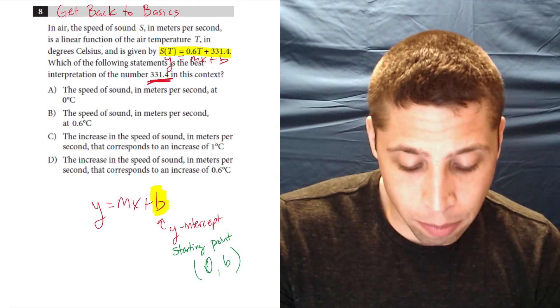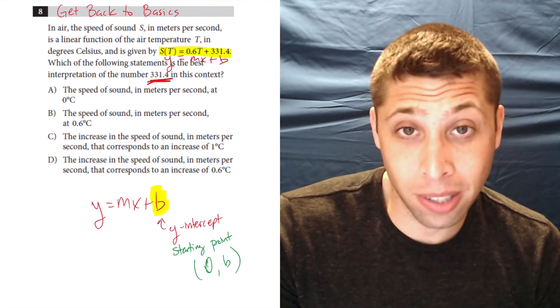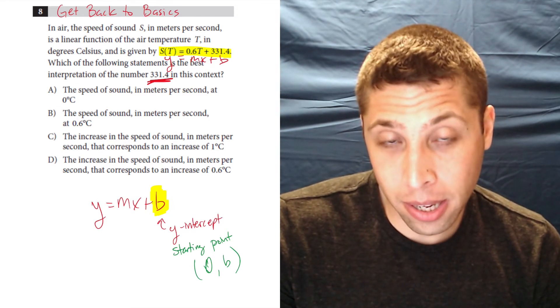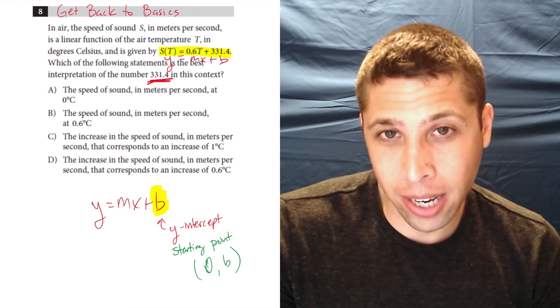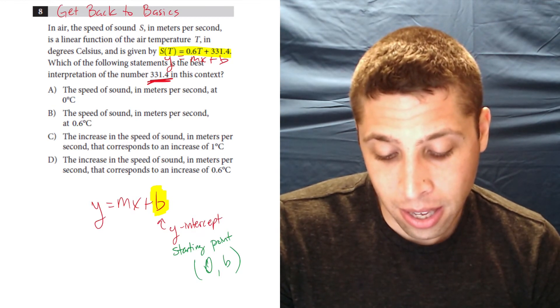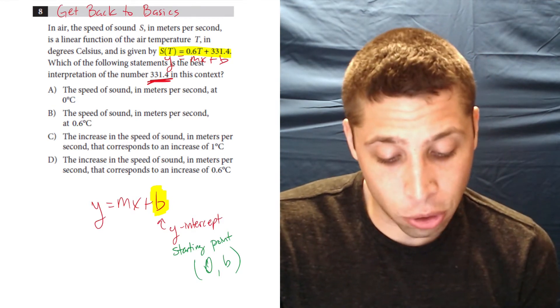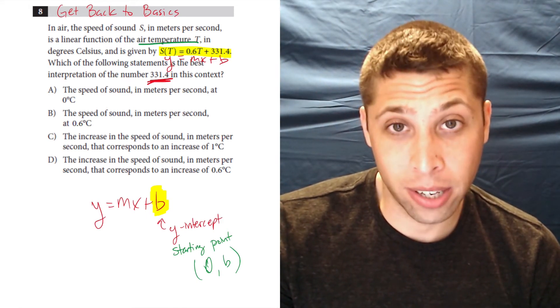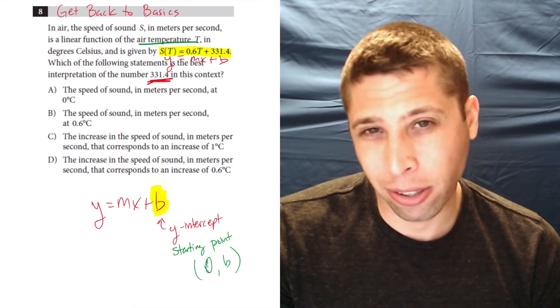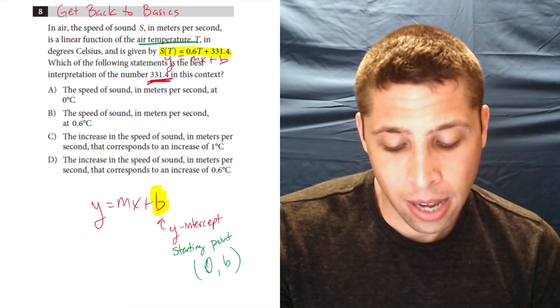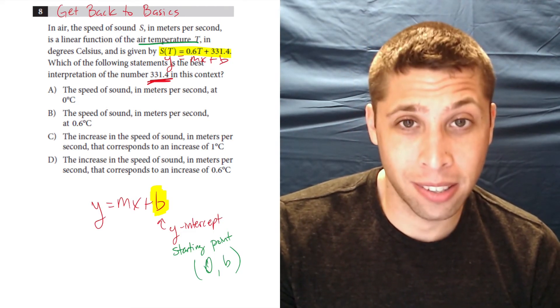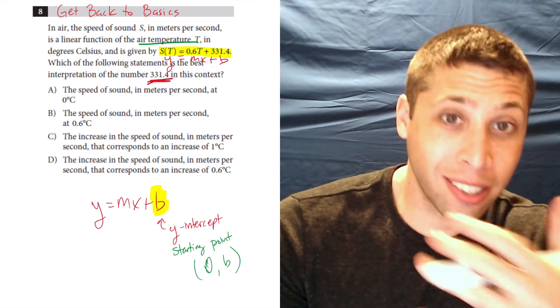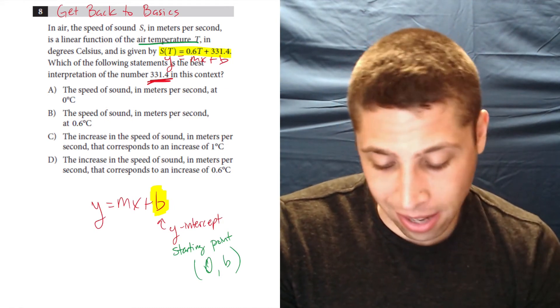B, the speed of sound in meters per second at 0.6 degrees Celsius. Well, I see the 0.6 in the equation, but why would that be the 331? If I put 0.6 in for T, which is the temperature, I could figure out what the speed of sound is at that point. And if I put 0.6 in, I'm not going to calculate it because it's kind of annoying, but I'd be doing 0.6 times 0.6 plus 331.4. So I'm adding something to that. So that's not going to work.